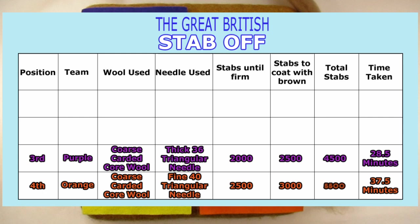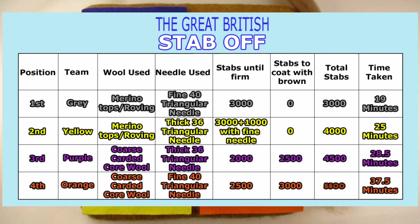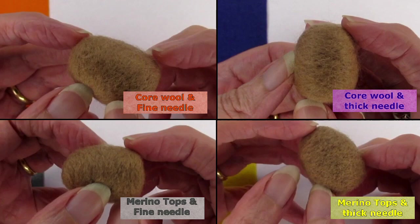In second place came the yellow combination of merino tops with a thick needle, as it didn't need coating but took 3,000 stabs with a thick needle and a further 1,000 stabs with a fine needle to get it as firm as the others. I was surprised by this, as I thought the thicker needle might have felted the merino tops more than the fine needle, but it seemed to have worked less efficiently. Which means in first place is the grey combination of merino tops and fine needle, only taking 3,000 stabs in total to get a brown firm felted item. I really didn't see that coming, but let's have a closer look at how smooth the finish is on them all. What do you think? Let me know in the comments.